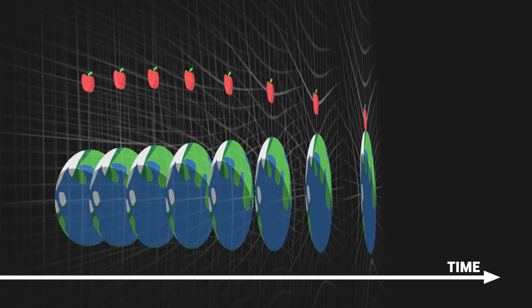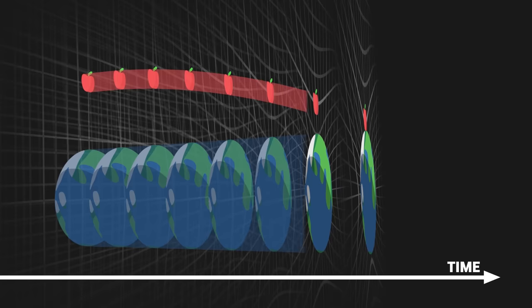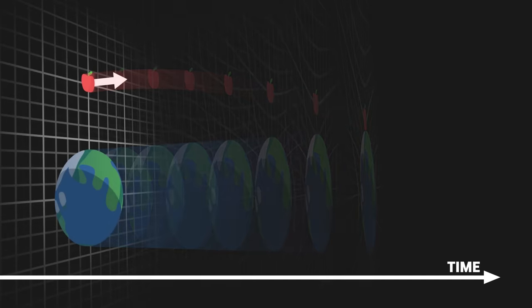With such a diagram, we see that the apple is always in motion. Even when it has no speed at the start of its fall, the apple is still moving in time. It progresses towards the future.